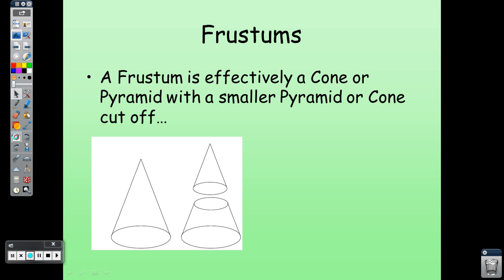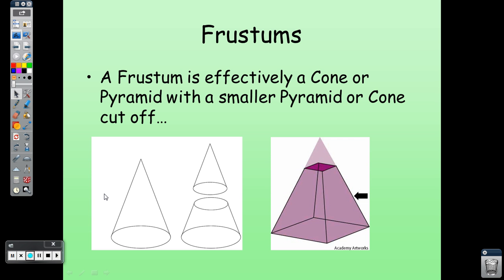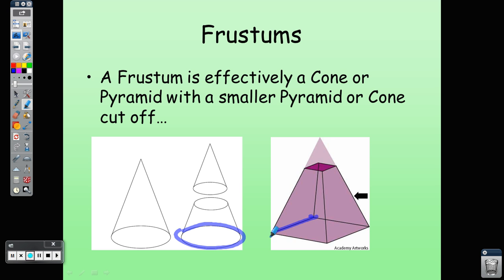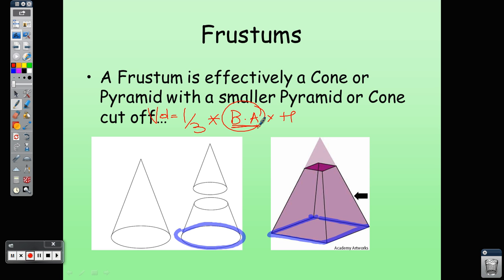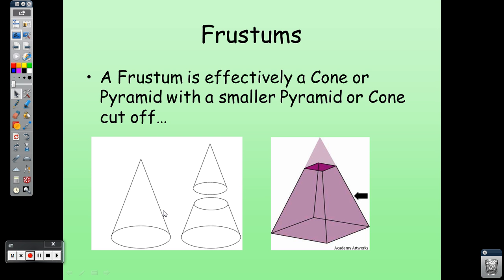Finding the volume of a frustum is a little tricky. The base of a frustum can be a circle, square, or rectangle. Since Volume = (1/3) × base area × height, we need to know the base shape: for a square it's side², for a rectangle it's length × width, and for a circle it's πr². We multiply the base area by height to find the volume.